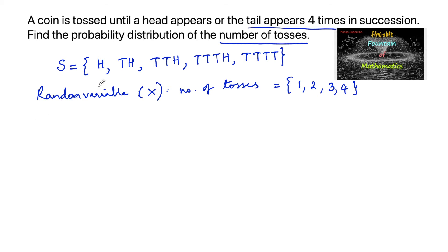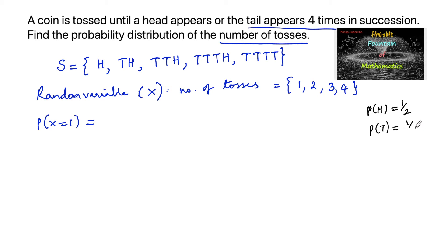Now let us find the probability distribution for each value of X. The probability at X = 1 means only one toss resulting in a head, so P(X=1) = 1/2. For X = 2, two tosses means first a tail (probability 1/2) then a head (probability 1/2), so P(X=2) = 1/2 × 1/2 = 1/4.